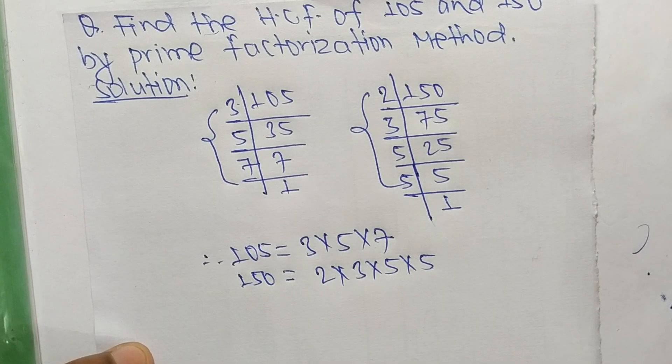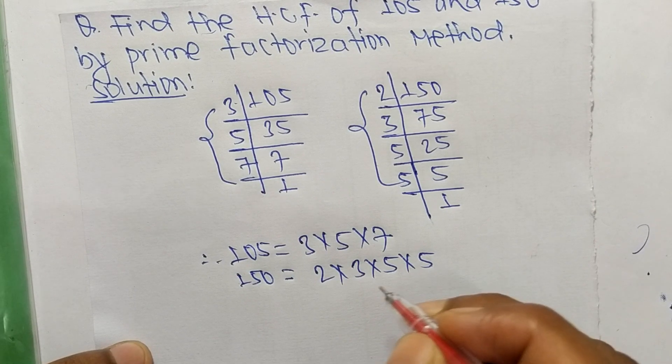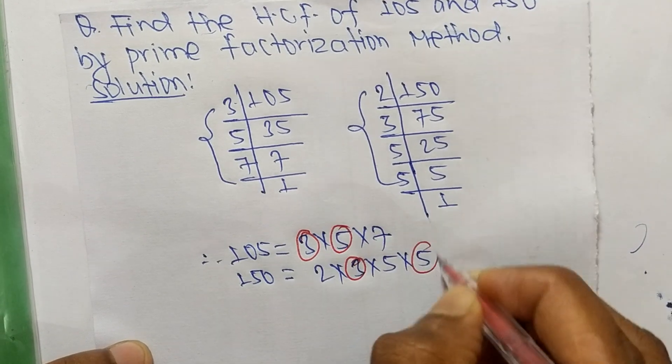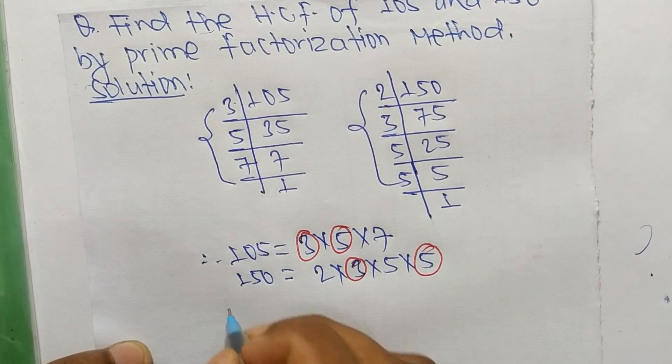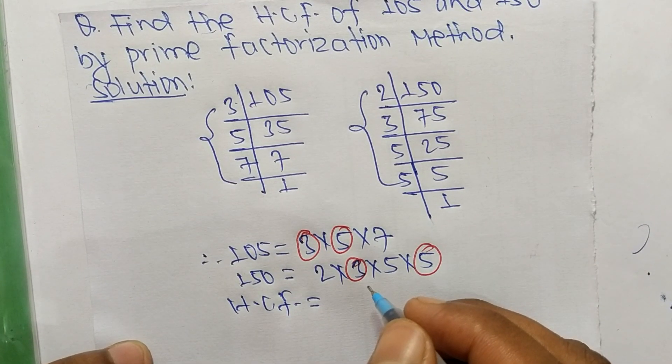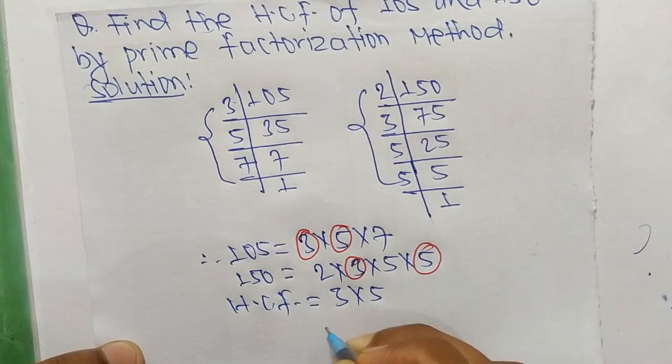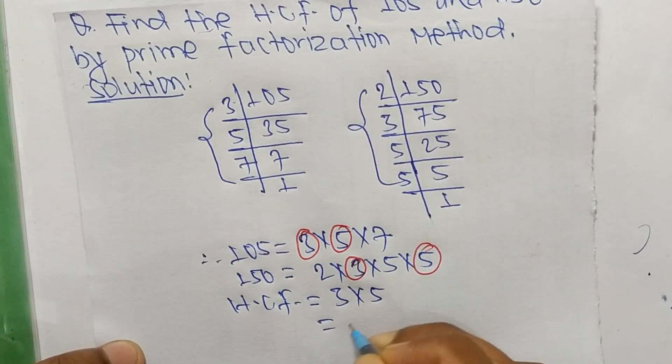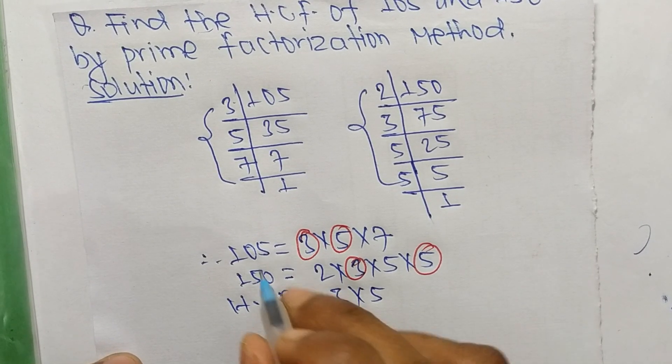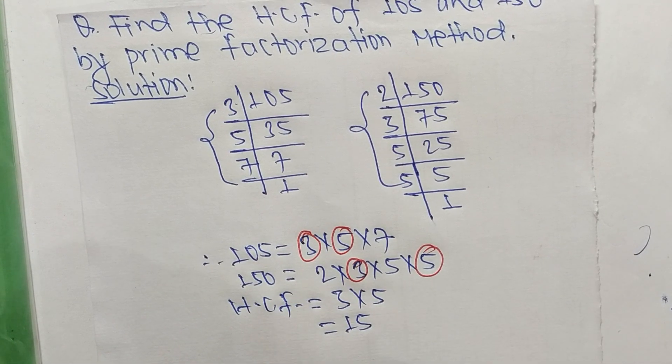Now we select the common factors in these prime factorizations. The common factors are 3 and 5. So the HCF equals the product of common factors: 3 times 5 equals 15. Therefore, 15 is the HCF of 105 and 150.